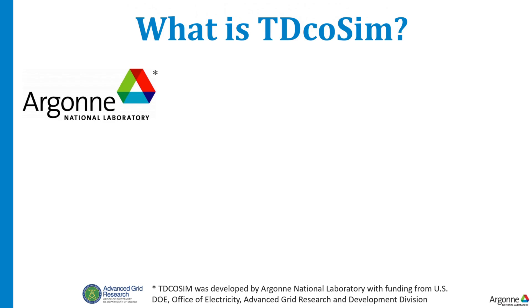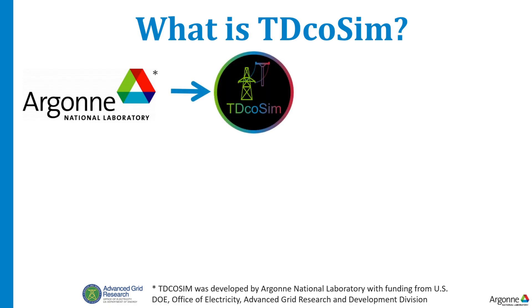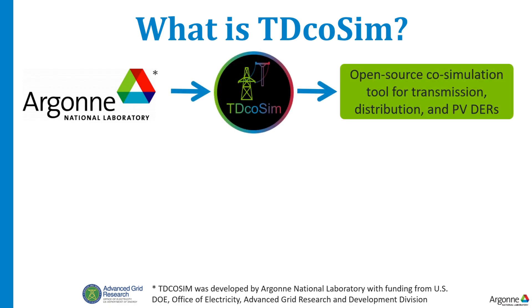Created by Argonne National Laboratory with support from the Advanced Grid Research and Development Division at the Department of Energy's Office of Electricity, TD-Cosyn is an open-source simulation package for co-simulation of transmission and distribution systems with or without DERs.